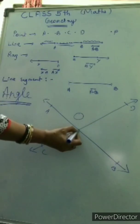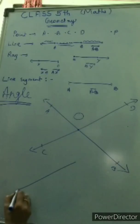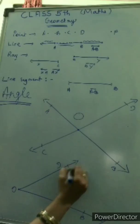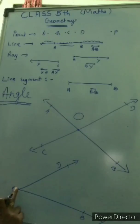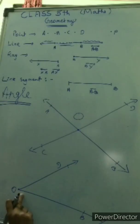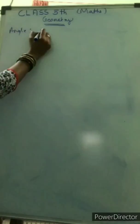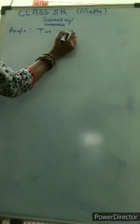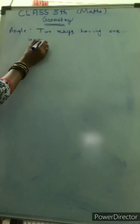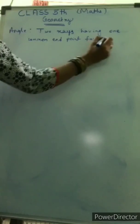Both rays have one common end point, that is O. Now I draw this separately. This is your O, this is your B, and this is your D. These two rays have only one single common end point. So OB ray and OD ray both join at O — this forms an angle. So children, I want to write the definition of an angle: two rays having one common end point forms an angle.